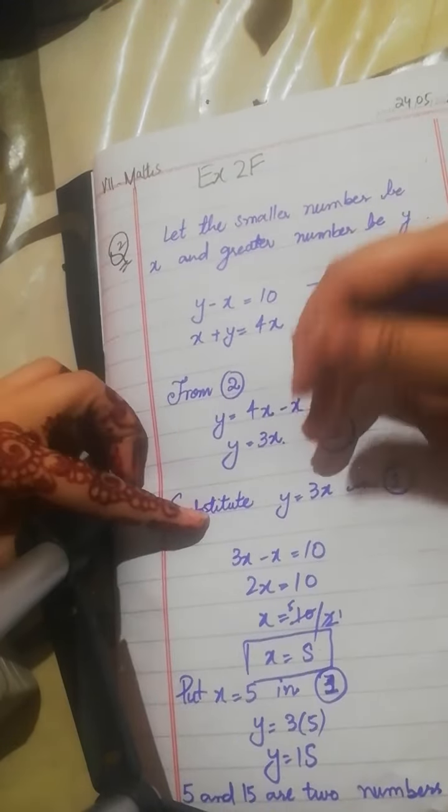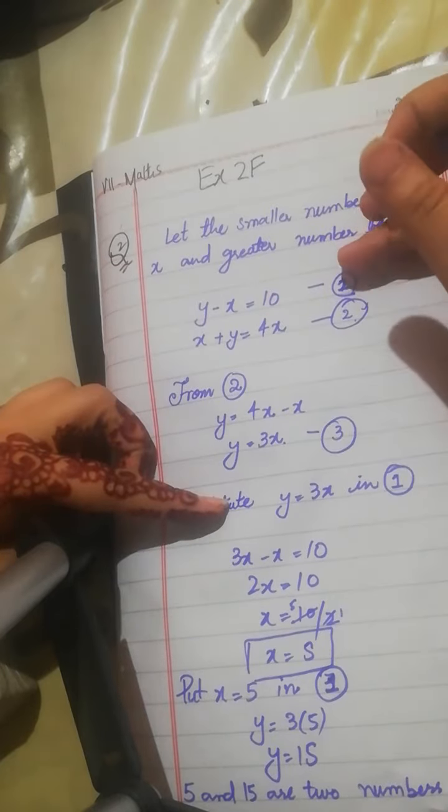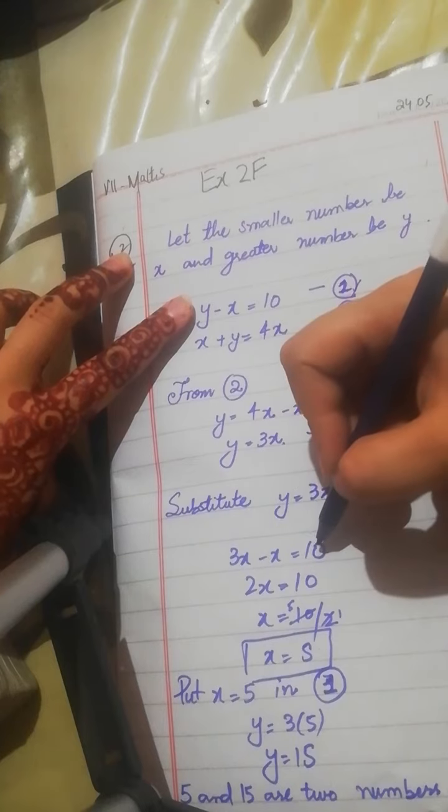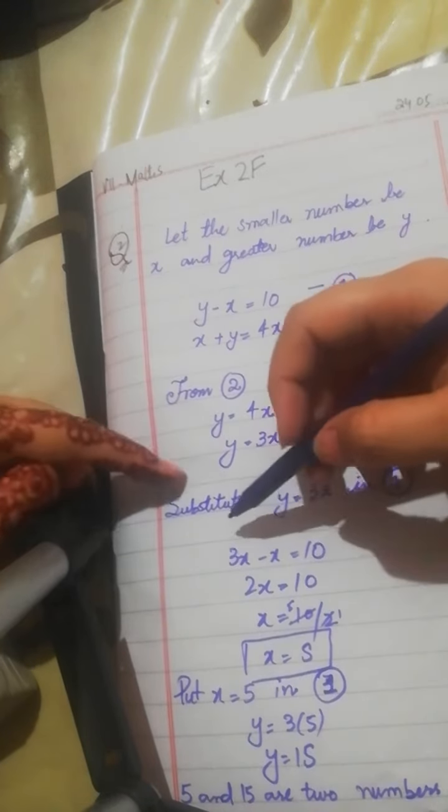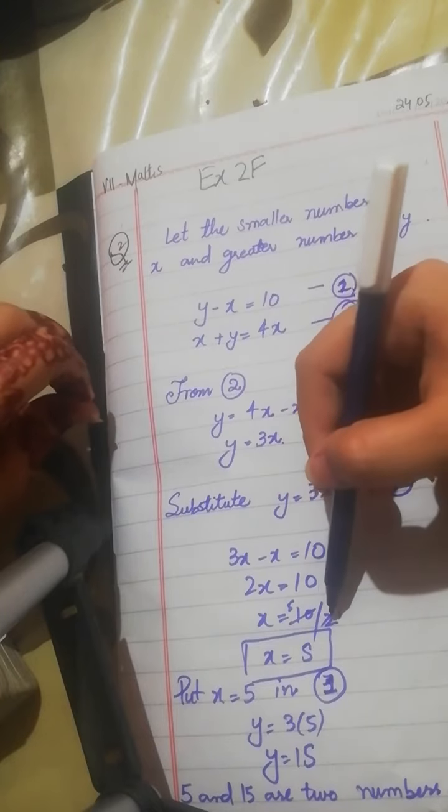Now we substitute y equals 3x. This is equation number 1. What do we put here? 3x minus x is equal to 10. 3x minus x equals 2x. 2x equals 10, so we divide. x equals 5.